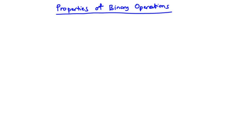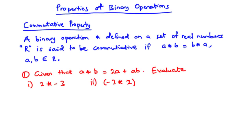Under the properties of binary operations, we are going to talk about the commutative property, the associative property, the distributive property, and the closure property. For the commutative property, a binary operation star defined on a set of real numbers R is said to be commutative if A star B is equal to B star A, where A and B are all members of the set R.